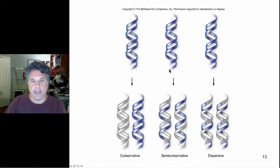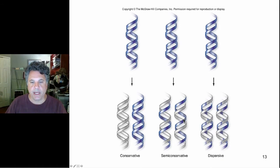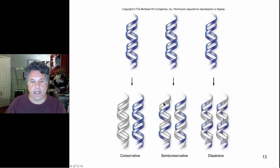If the strands separated — so we separate these blue strands here — and then build grey strands upon each blue strand using base pair complementarity, A's paired with T's and G's paired with C's, then you would end up with two daughter molecules that were identical in nucleotide sequence to the parental molecule.